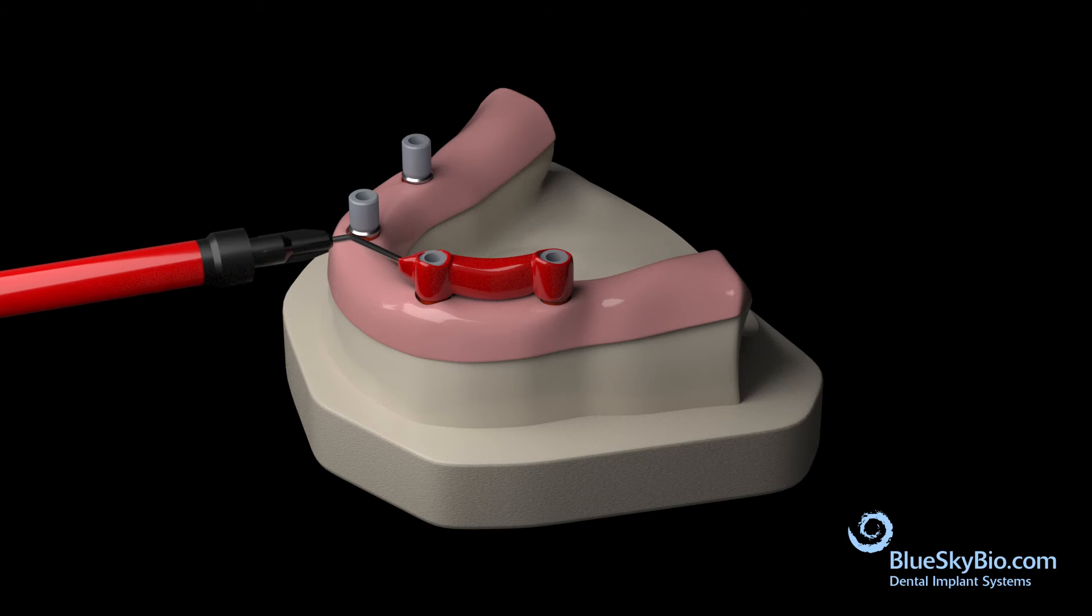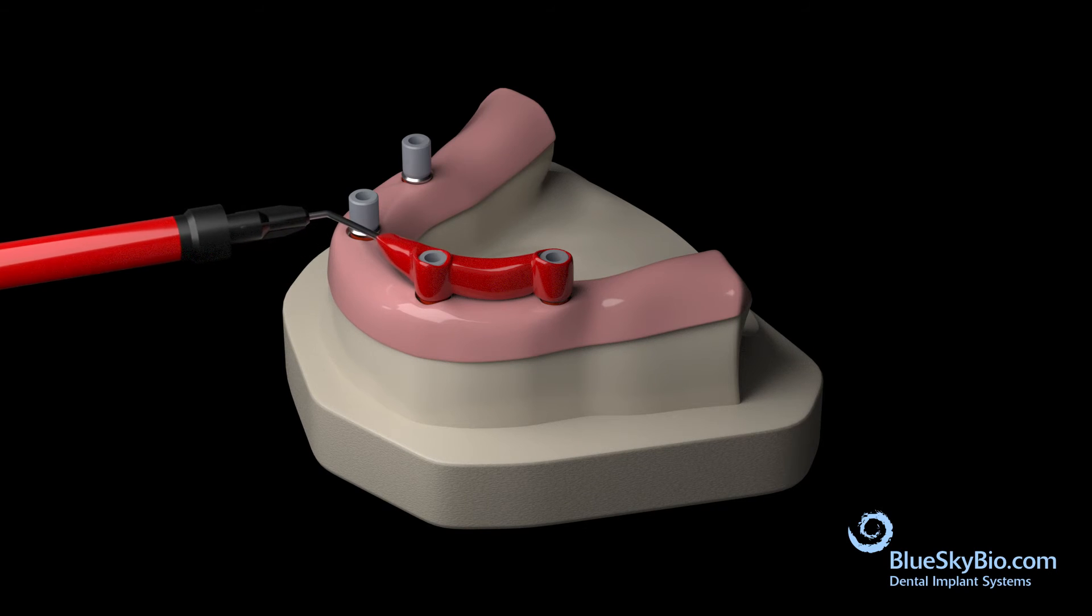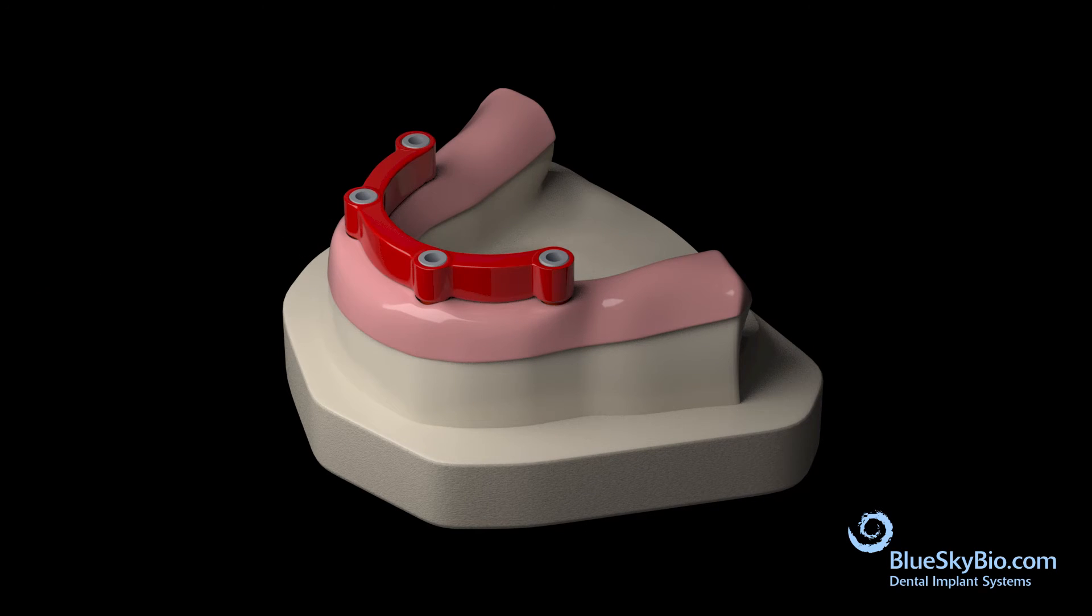Begin fabrication of the UCLA bar by placing Primo pattern or wax directly to the castable plastic portion of the UCLA abutment. Wax the locators into the bar resin.